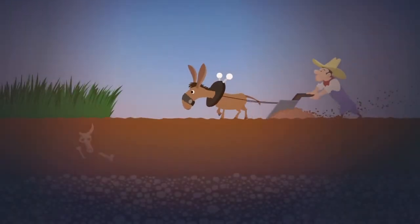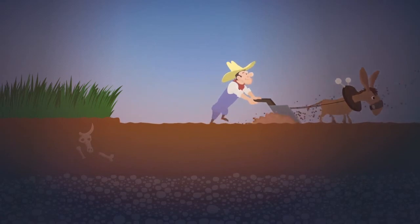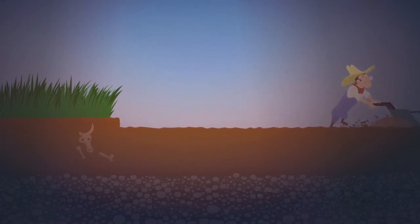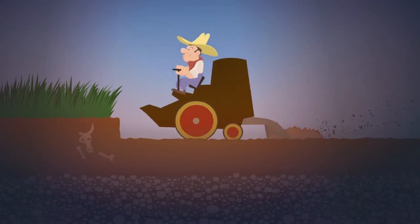Still another threat is topsoil loss. Two hundred years ago, there were six feet of topsoil on the American prairies. Today, through tillage and poor practices, approximately half is gone.